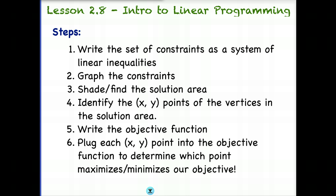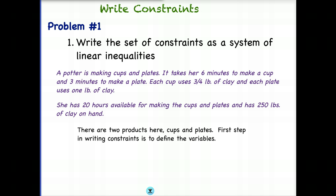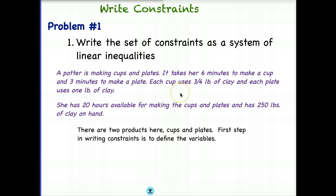Let's do our first example. We are going to write the set of constraints as a system of linear inequalities — that's all we're going to do for this first problem. Here's our scenario: a potter is making cups and plates. It takes her six minutes to make a cup and three minutes to make a plate. Each cup uses three quarters of a pound of clay, and each plate uses one pound of clay. She has 20 hours available for making cups and plates, and has 250 pounds of clay on hand.